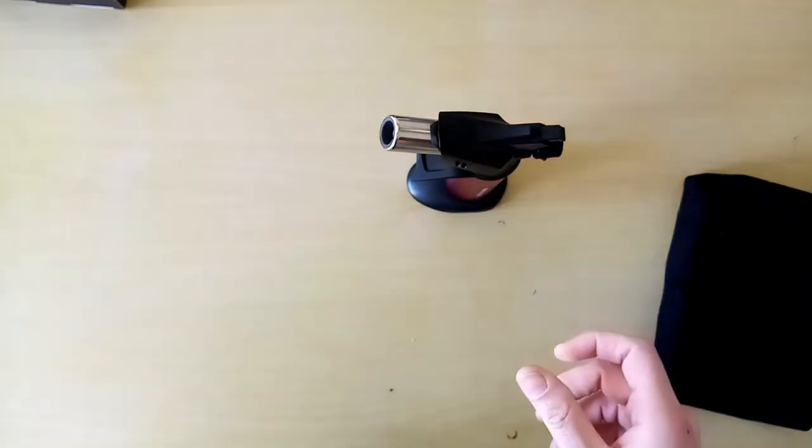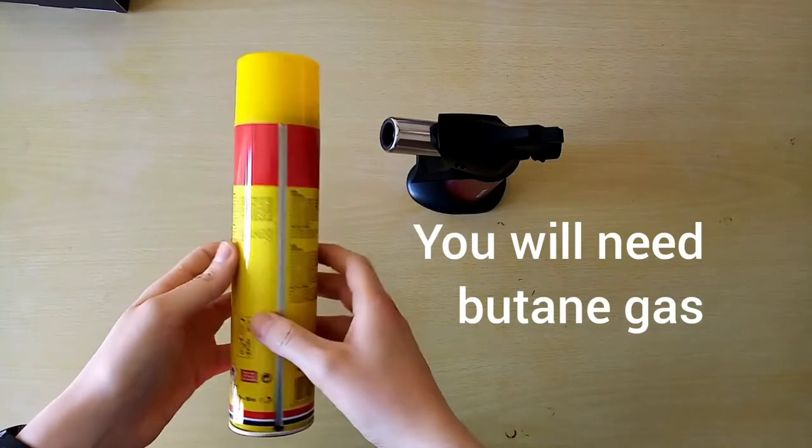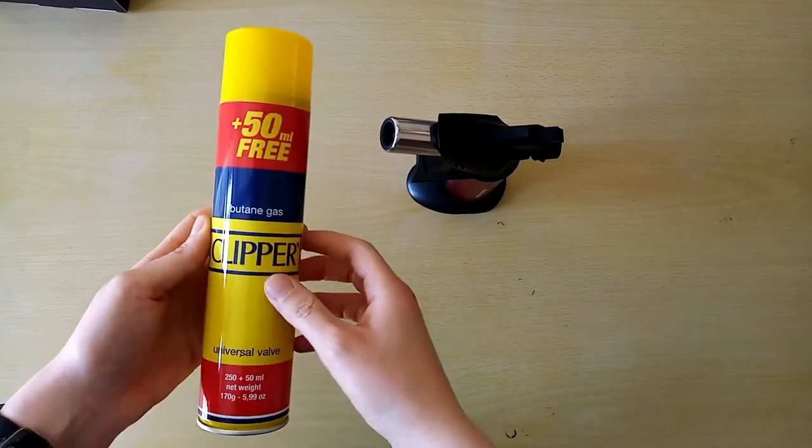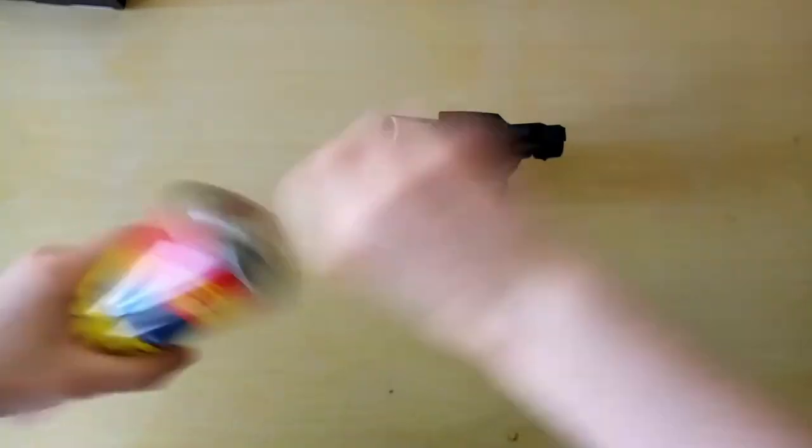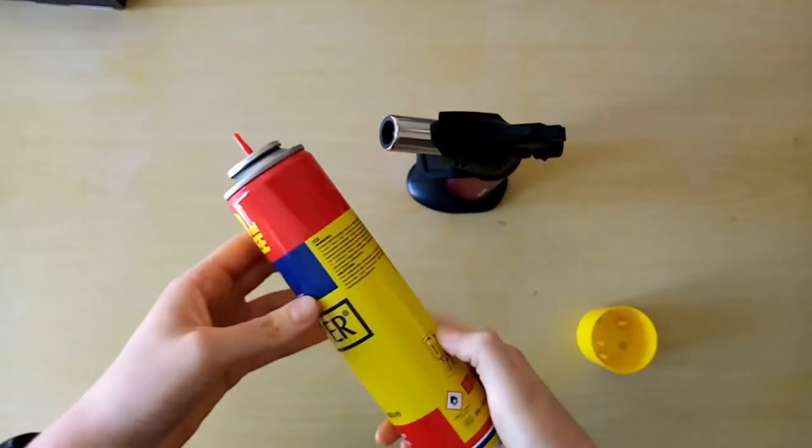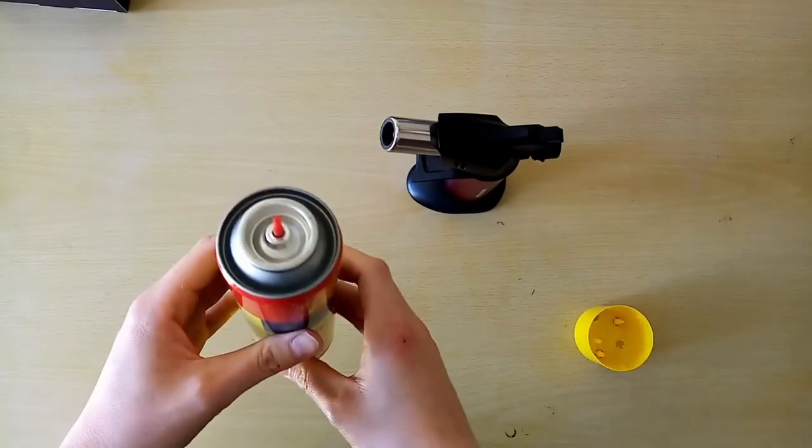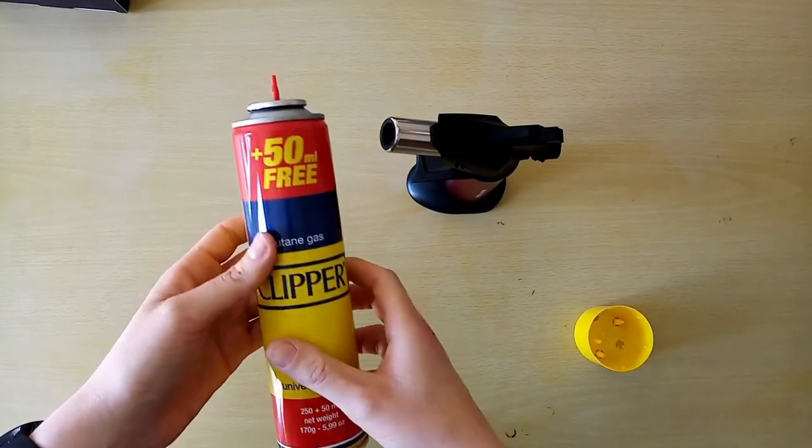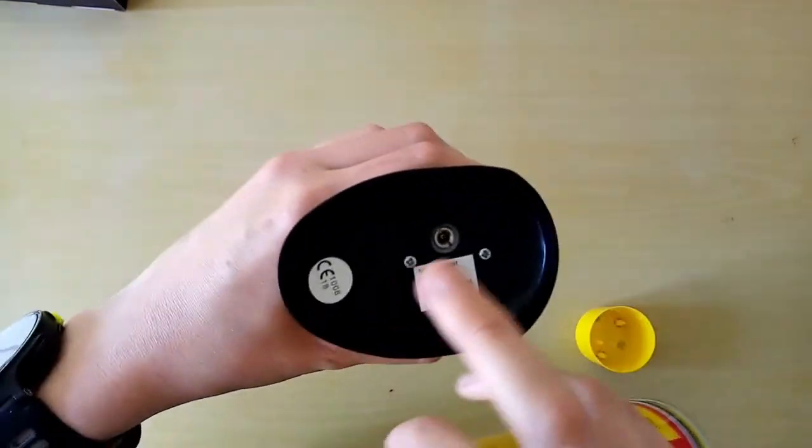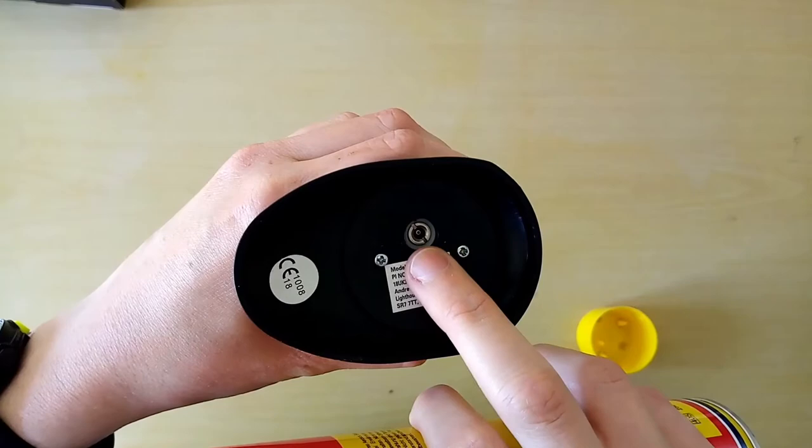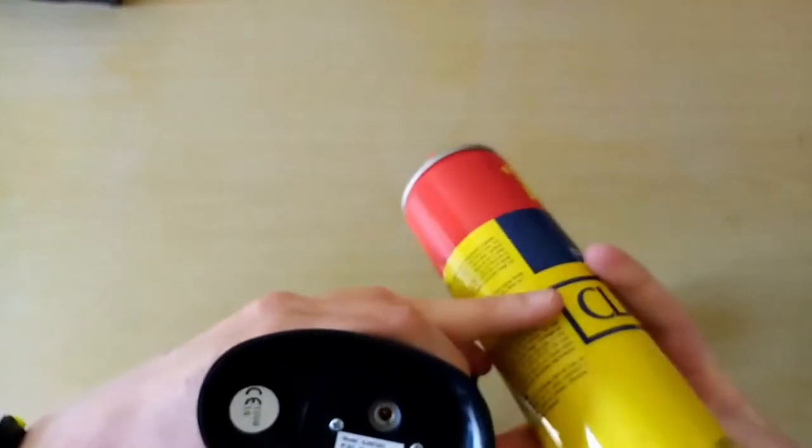These torches are filled with butane gas. I'm going to show you how to fill your torch as it can be tricky sometimes. I've gone with the brand Clipper, it's a very well-known brand. You'll see there's a variety of nozzles that come with your can of butane gas, but usually the nozzle that's already on it fits just well. You'll see in the bottom of your torch there is a little gasket.